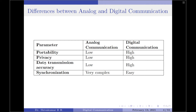The next parameter is data transmission accuracy. The accuracy of data transmission for analog communication is considerably low, whereas for digital communication it is considerably high. Lastly, we talk about synchronization. It is very essential to have the transmitter and receiver synchronized for proper transmission of data from its source to a destination.